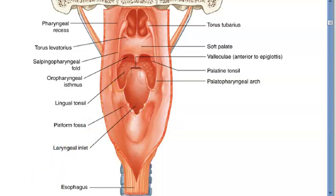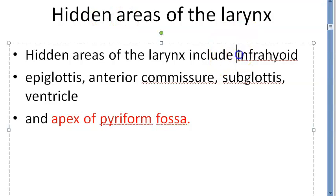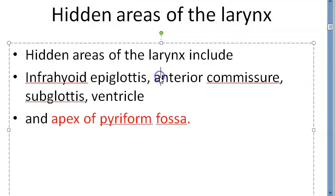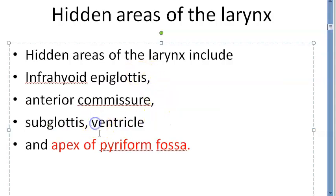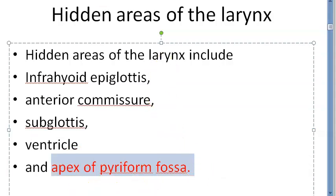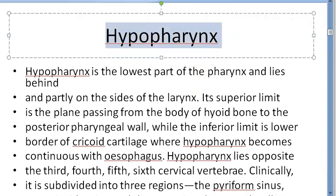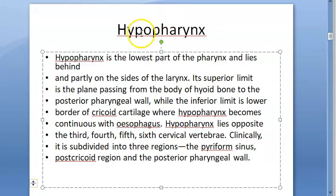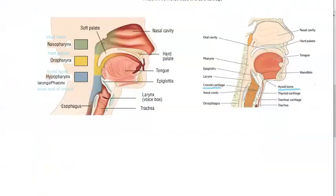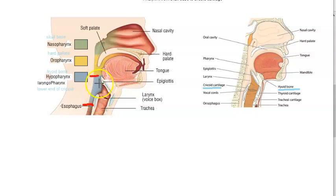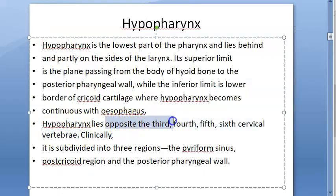There are some hidden areas in the larynx, including the infrahyoid epiglottis, anterior commissure, subglottis, ventricle, and the apex of the pyriform fossa — that apex is a hidden area of the larynx. We are talking about the laryngopharynx or hypopharynx, the lower part of your pharynx. The hypopharynx or laryngopharynx extends from the hyoid bone to the lower end of the cricoid.